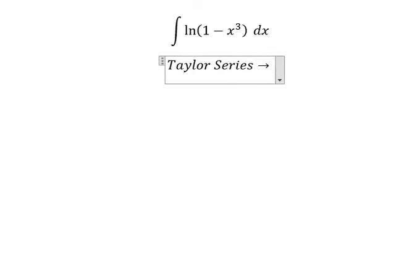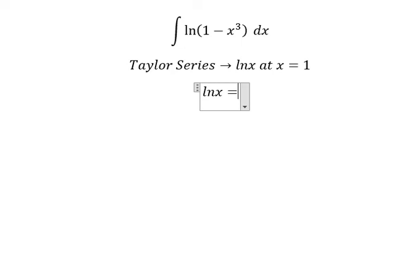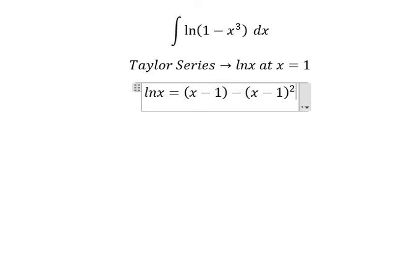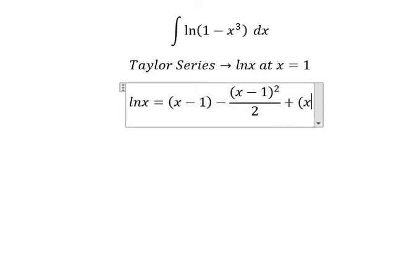That is about ln(x) at x equals to number one. So the series of ln(x) should be about x minus one minus (x minus one) to the power of two over two plus (x minus one) to the power of three over three minus (x minus one) to the power of four over four, and so on.